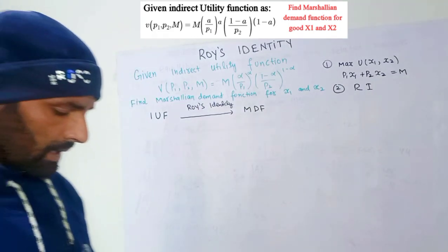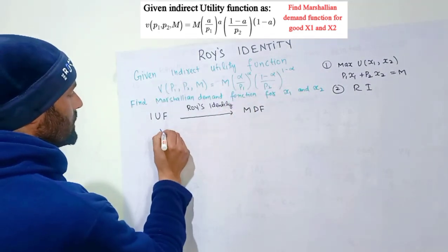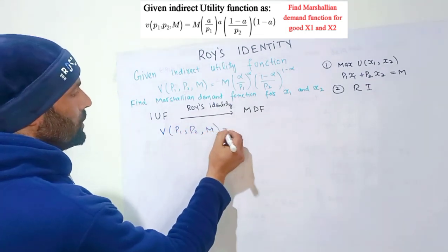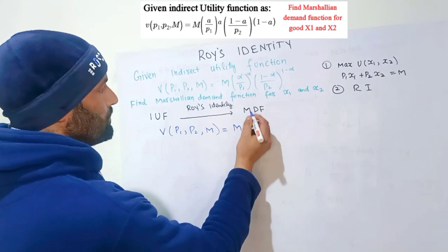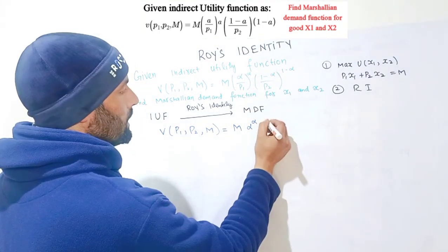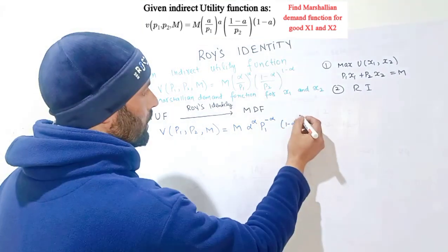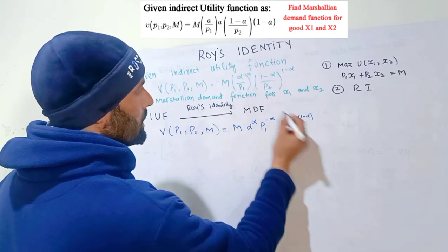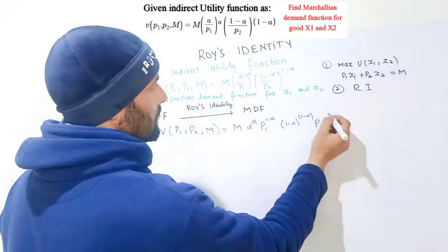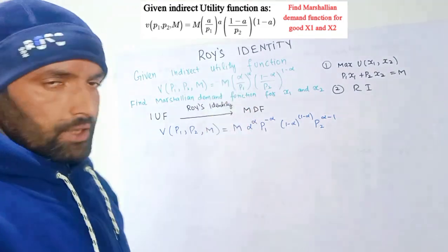The formula is straightforward. Let me first rewrite the indirect utility function: V(p1, p2, m) = m * alpha^alpha * p1^(-alpha) * (1-alpha)^(1-alpha) * p2^(alpha-1). I have simply transposed the price terms to the numerator, changing the exponent signs accordingly.